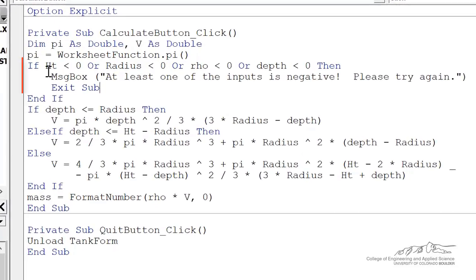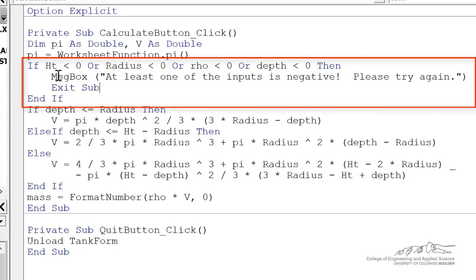So the first thing I've said here is if any of those variables, height, radius, rho, or depth, so I have ORs separating them. If any of those statements, these conditional statements, is true, then we're going to display a message box. At least one of the inputs is negative. Please try again. And we're going to exit sub.